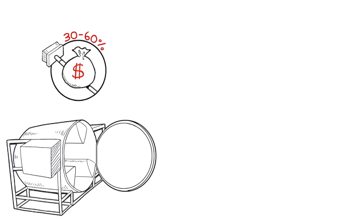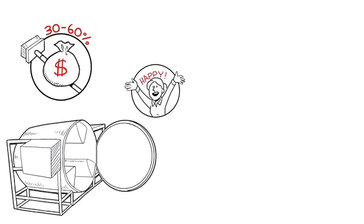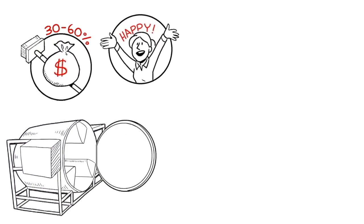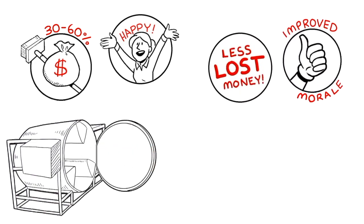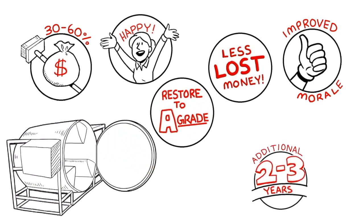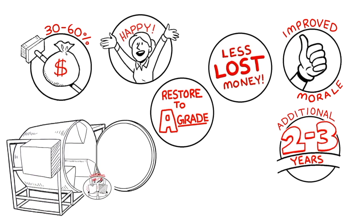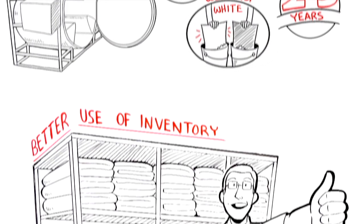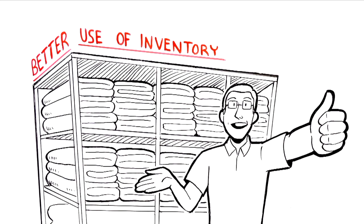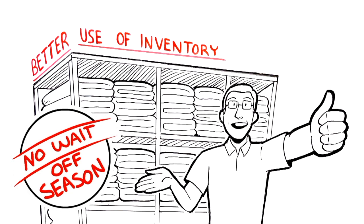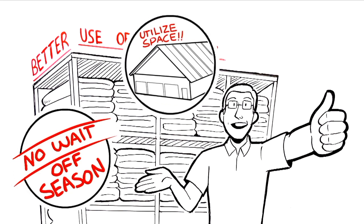Here's how a tent washer can save you time and money. Save 30-60% on labor. Happy customers with fewer complaints equals less lost money. Improved employee morale and retention. Restore B or C grade tents to A grade. Extend the life of your tents by 2-3 years. All vinyl, webbing, and strapping will be wedding white. Better use of inventory. You'll do more jobs with fewer, cleaner tents. No waiting till off-season to clean tents. And better utilization of your precious warehouse space.